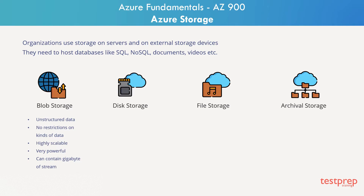Blob storage is meant for unstructured data — there are no restrictions on the kinds of data it can hold. These blobs are highly scalable and you can put an unlimited amount of data inside. The locations can then use the data for reading and writing purposes. Blob storage is very powerful; it can manage thousands of concurrent loads, massive amounts of video data, and constantly growing log files, and they can be read from anywhere. A blob could contain gigabytes of stream data for any purpose.